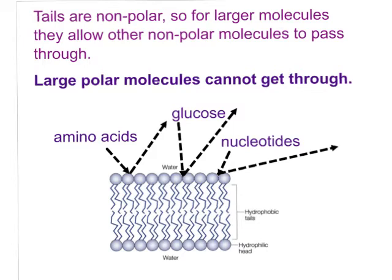Let's talk about polarity. A polar molecule has differently charged ends — very different from one side to the next. Non-polar is the opposite: a non-polar molecule is fairly similar all the way around. These hydrophobic tails are all non-polar — they're long hydrocarbon chains and those hydrogens stick out in all directions, canceling each other out as far as charge goes, making them very non-polar.